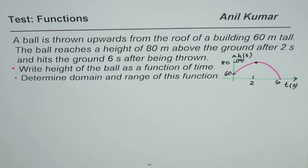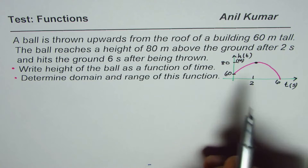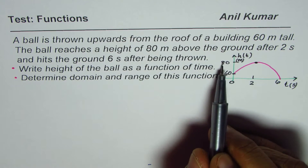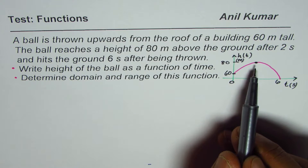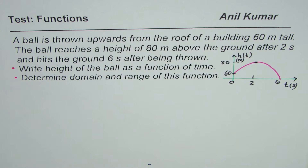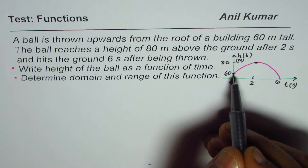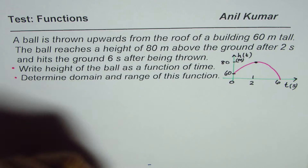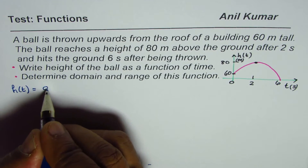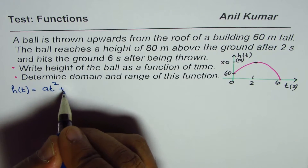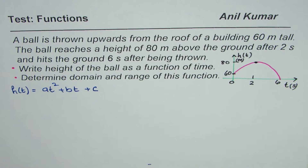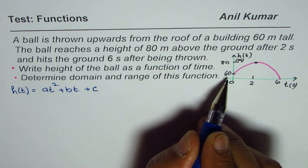It hits the ground 6 seconds after being thrown. Since the building is 60 meters tall, at t = 0, height of the ball is 60. You should not assume that 80 is the peak or the vertex — it may be, but you should not assume that. We are given three points on this parabolic path, and with those three points we will find the equation. In general, the equation will be h(t) = at² + bt + c, and the idea is to find a, b, and c.